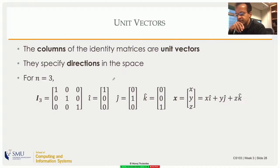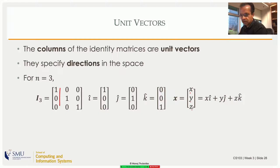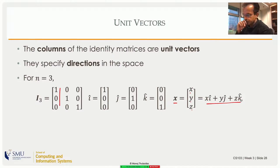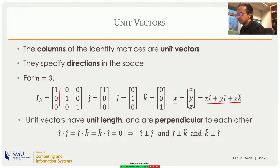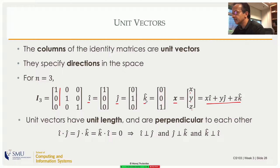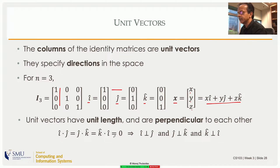Coming back to normal 3D space and a 3 by 3 identity matrix: the first column is the first unit vector, the second is the second unit vector, and so on. A general vector written as [x, y, z] can be expressed as x times the first unit vector plus y times the second plus z times the third — a linear combination. In classical physics these are called i-hat, j-hat, k-hat. Note that i-hat dot j-hat equals zero, j-hat dot k-hat equals zero, but i-hat dot i-hat equals one.